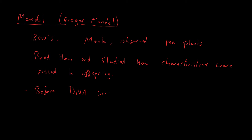Importantly, this was in the 1800s, before DNA was discovered, so his findings were met with criticism because there was no proof of what was being passed on. After Mendel died, in the 1900s, more studies were published that agreed with his theories, proving them correct. When DNA was eventually discovered, you could see exactly what was being passed from parents to offspring.